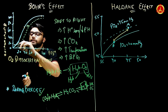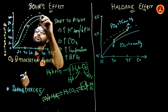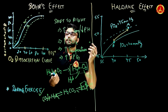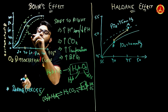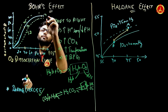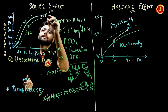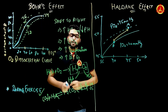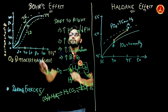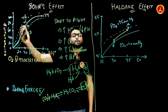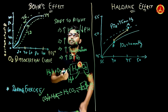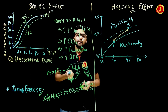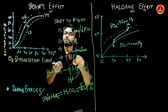A shift to the left occurs when H+ ions are decreasing or pH is increasing. For example, at pH 7.6 the curve shifts left, meaning CO2 is decreasing and temperature is decreasing. This happens in the lungs, where CO2 is being expelled out.